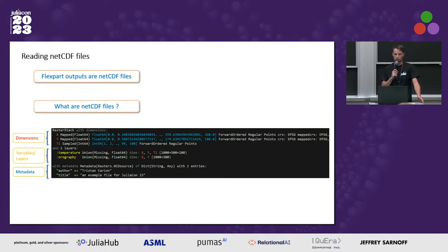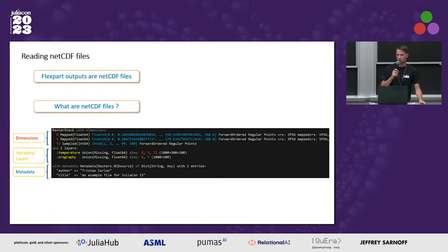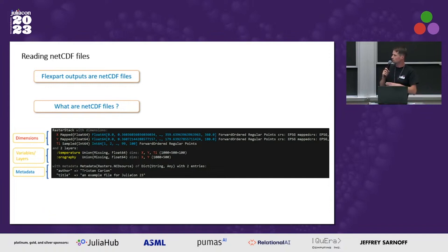To show you how the API can be used, I picked some examples. We will try to use the API to read one of the Flexpart outputs. Flexpart is the dispersion model I talked about earlier. Flexpart provides its output as NetCDF files, which is a file format to represent data cubes. This data format consists of layers — also called variables — that are defined on some dimensions, and you can also have metadata with it.